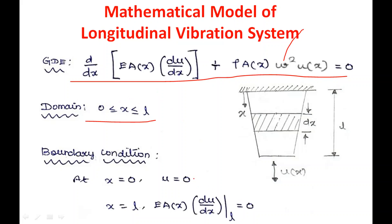The boundary condition at the top end is a fixed end, so at x = 0, u = 0. At the free end, there is no external force acting, so the boundary condition at x = L is EA(x) du/dx = 0.